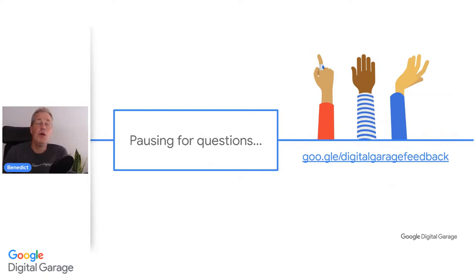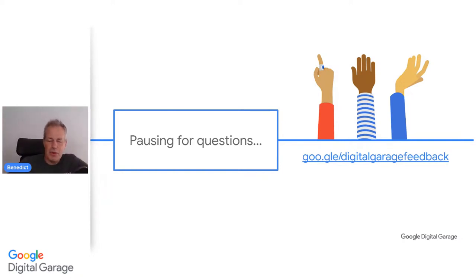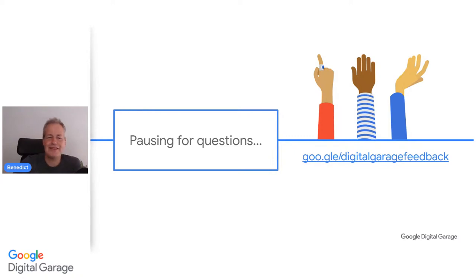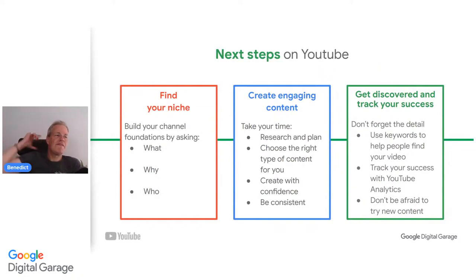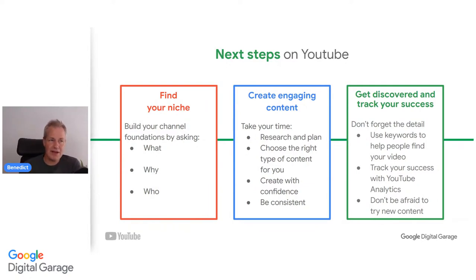Abhishek asks: what are the best tools for video editing? It depends — I would recommend starting with something like iMovie or Windows Movie Maker. There's another one I quite like: DaVinci Resolve. It's also free and quite useful. Don't go too complicated — go for something simple, get into operation and get running. Next steps on YouTube: find your niche — build your channel foundations by asking what, why, who. Create engaging content — research and plan, choose the right type of content for you, create with confidence, be consistent. Get discovered and track your success — use keywords to help people find your video, track your success with YouTube analytics, and don't be afraid to try new content.